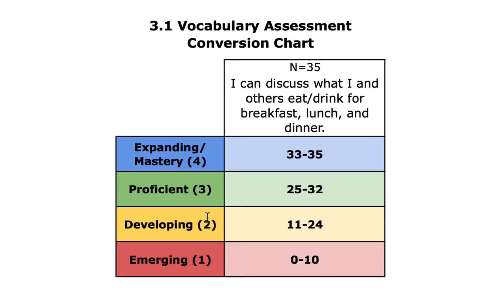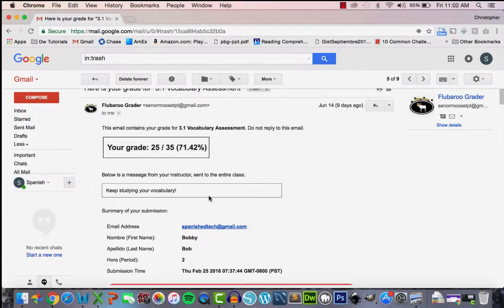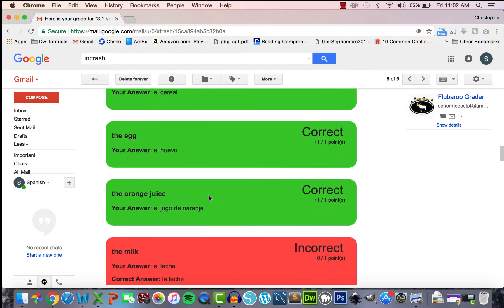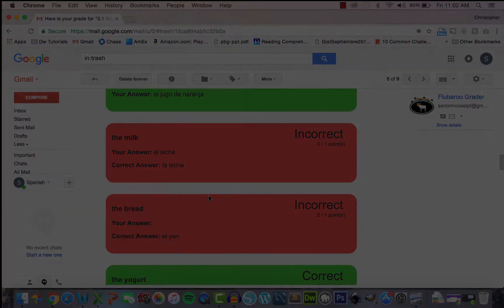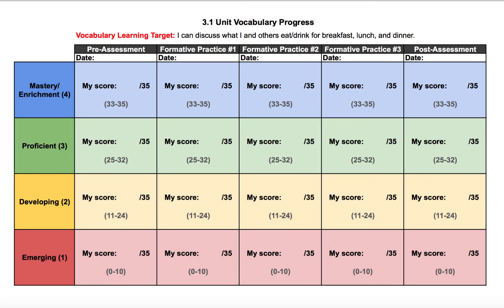After students take the pre-vocabulary assessment, you need to introduce them to the conversion chart and how their grades will be reported for these assessments. It gets much easier after the first time that you do this. After students receive their pre-test feedback and an understanding of the conversion chart, each student needs to receive a progress chart, which they will use to track their progress throughout the unit, and which you will use to measure student growth and eventually to create SMART goals.